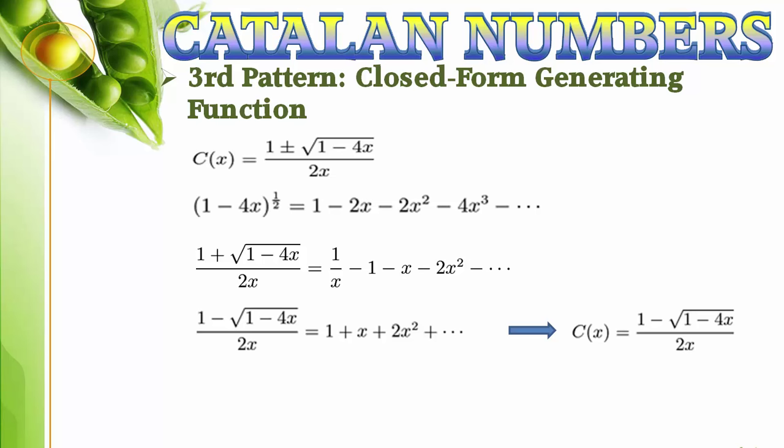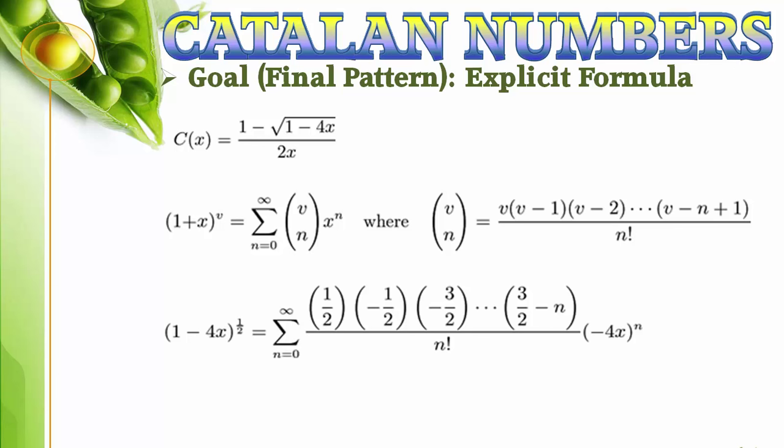Now we have one last step, finding the actual explicit formula for the nth Catalan number. Remember, according to the definition of the generating function, we just need to find the formula for the coefficient of x to the n. First, we use the binomial theorem to find the coefficient of x to the n in the expansion of the square root.